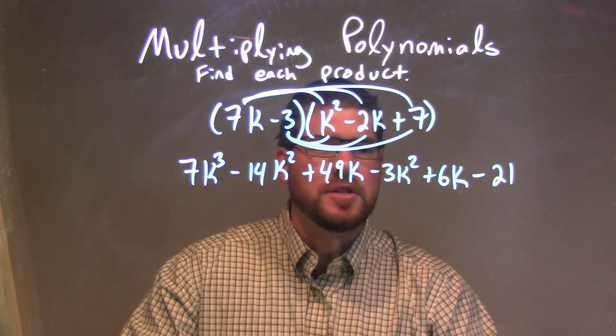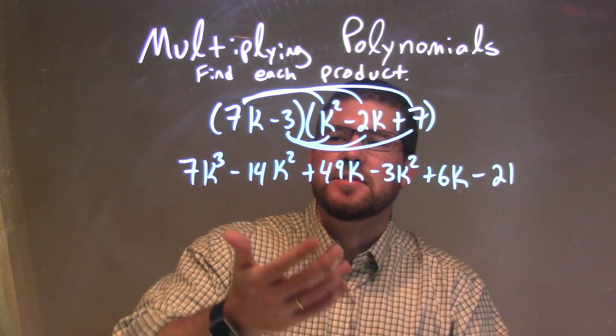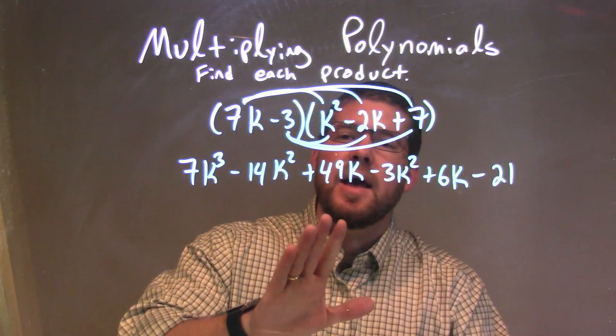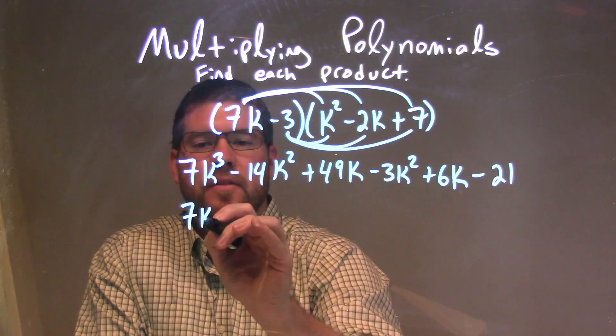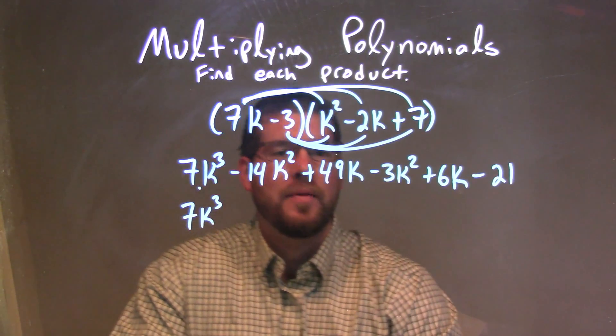Now I'm going to rearrange and combine my like terms together, putting the highest degree first. The highest degree is 7k to the third, so I'll rewrite that right there.